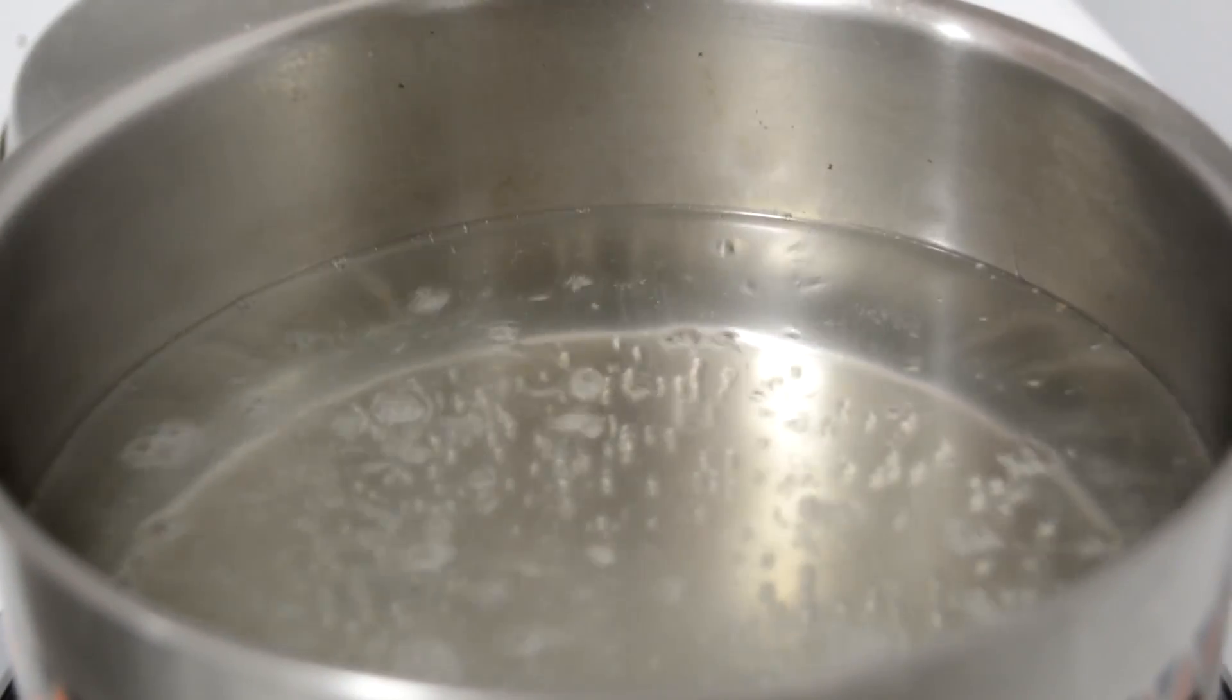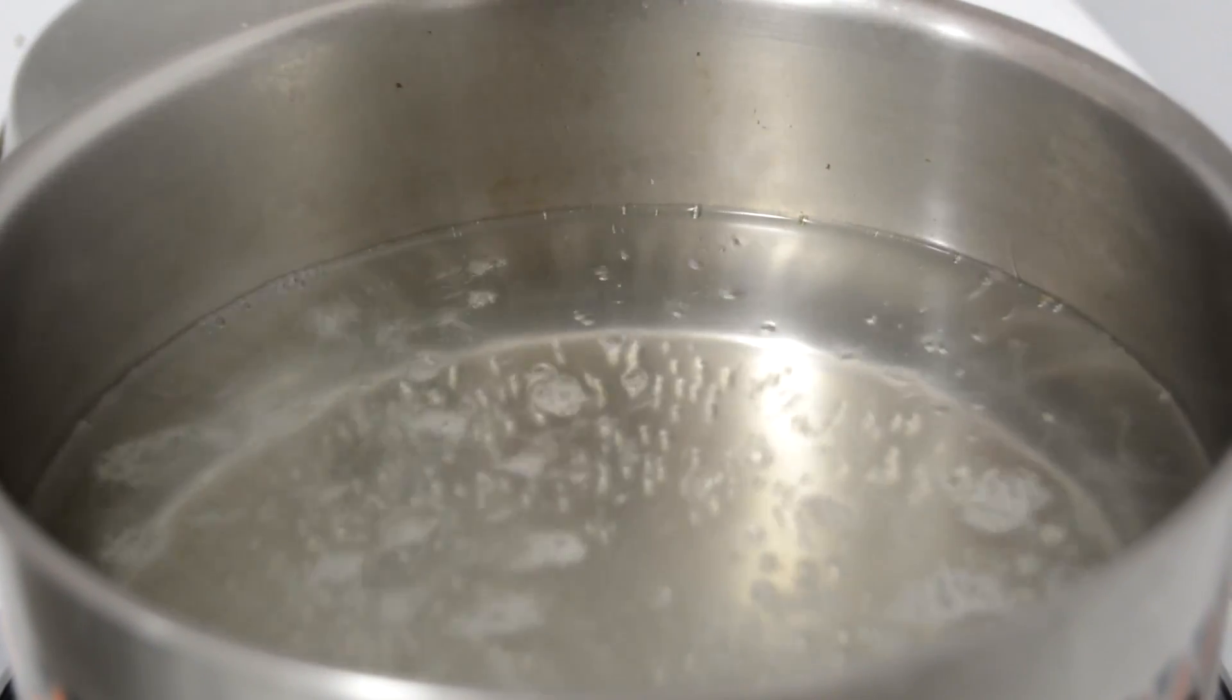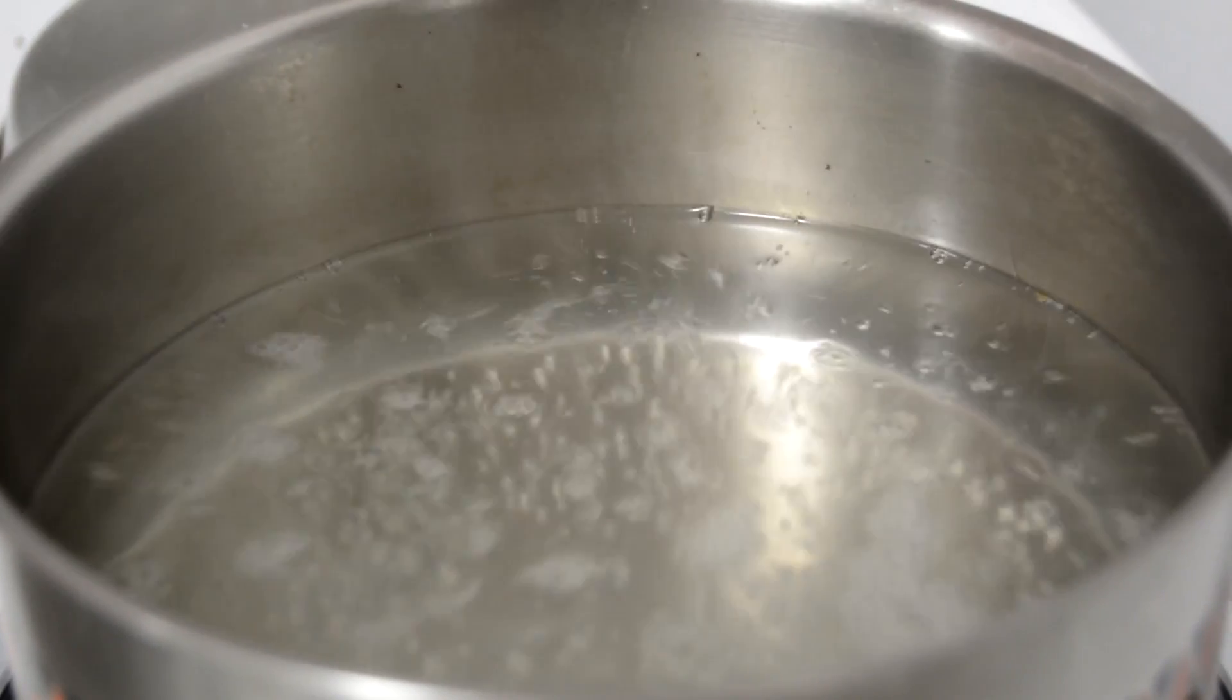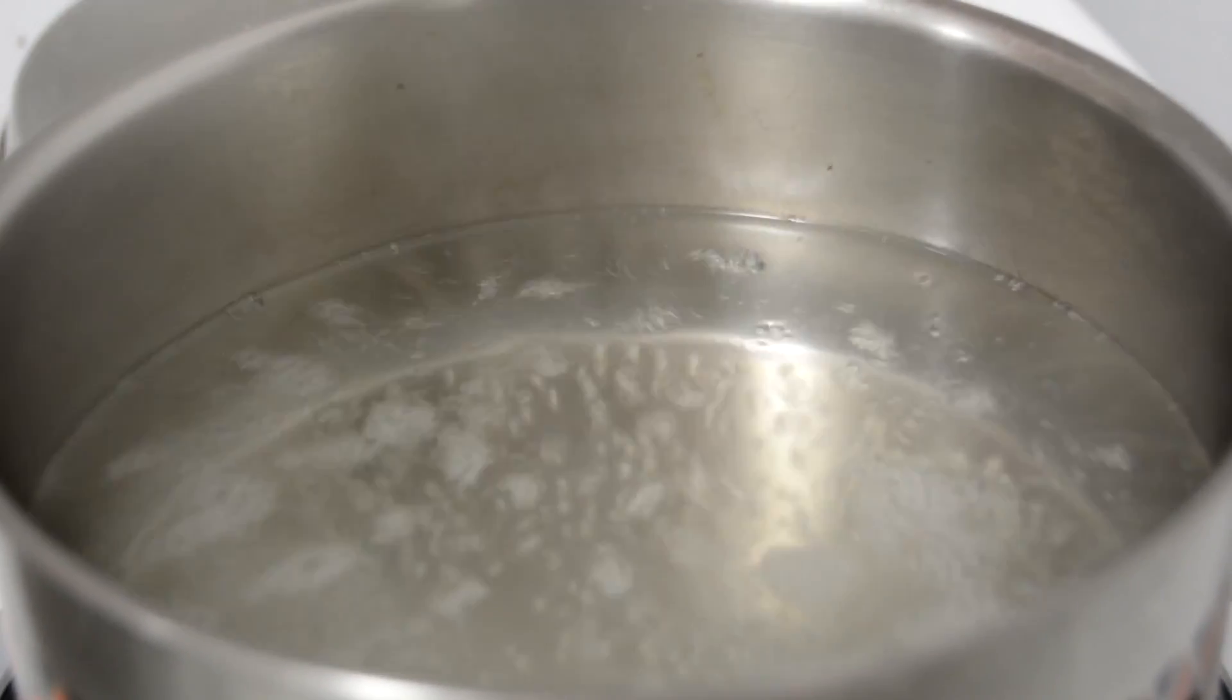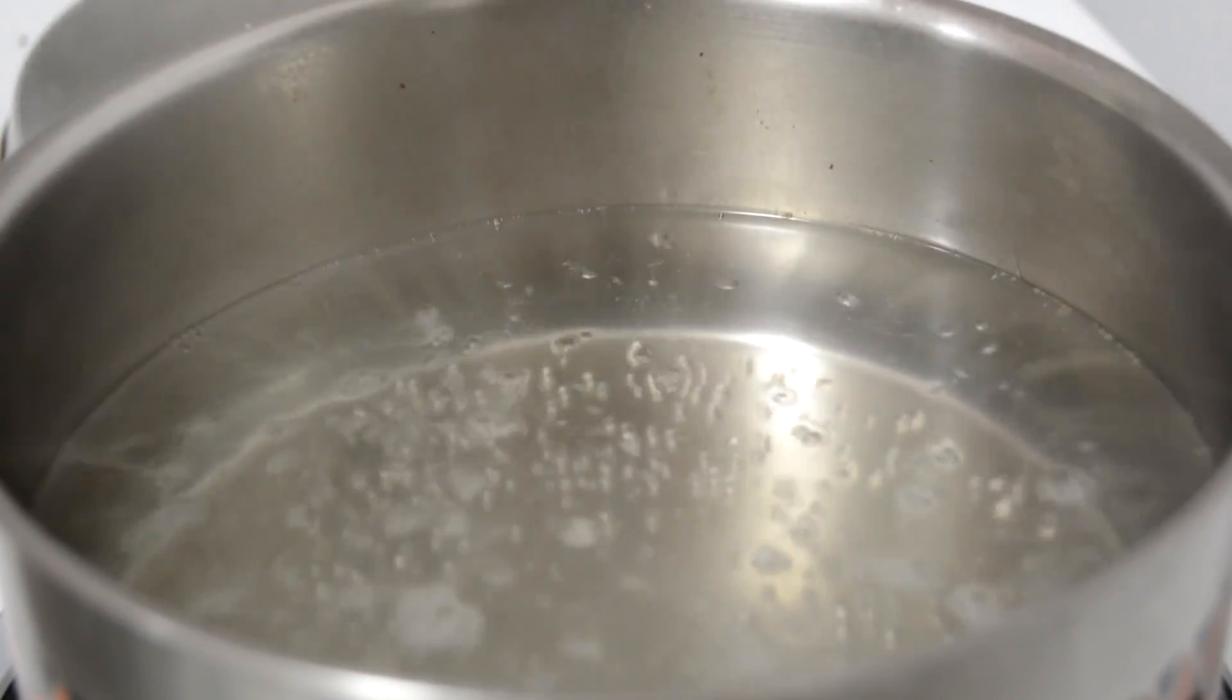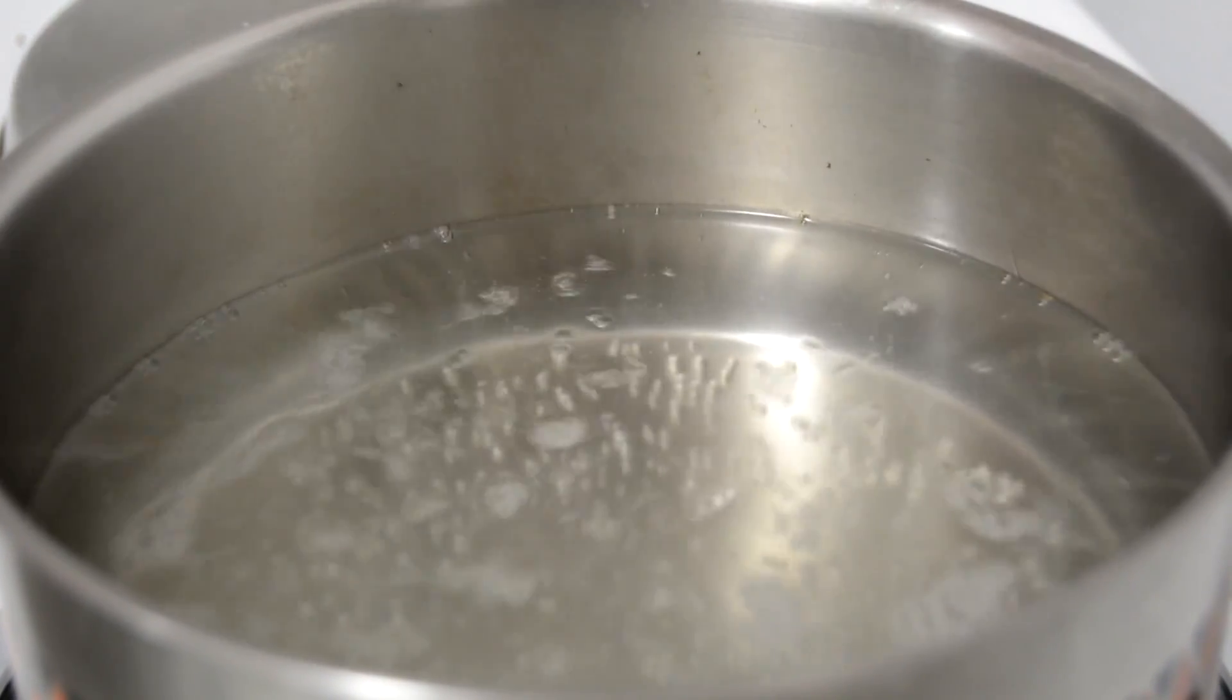So now you're going to have to boil down the baking soda and vinegar. You'll know when to stop when you see crystals forming along the sides of the pan and the baking soda and vinegar is about 90% gone. So yeah, I'll be back when I'm done.